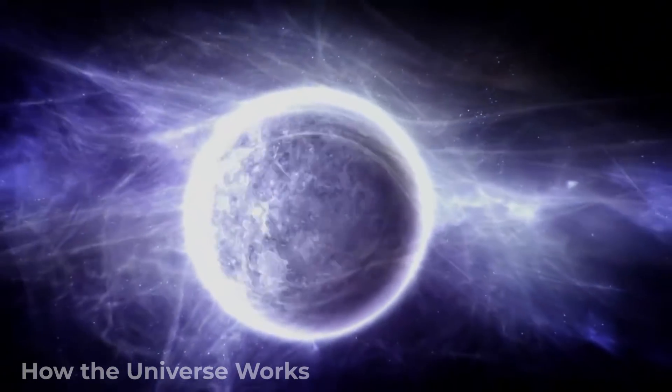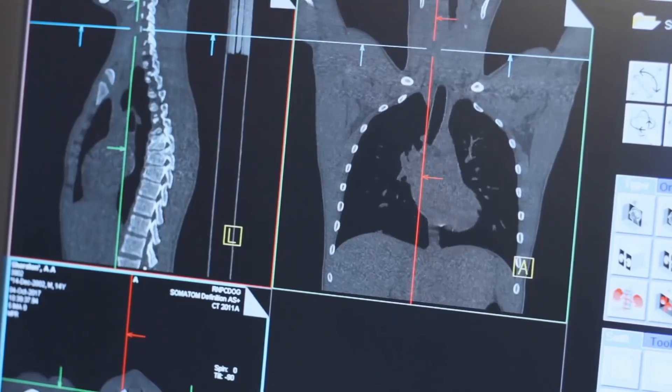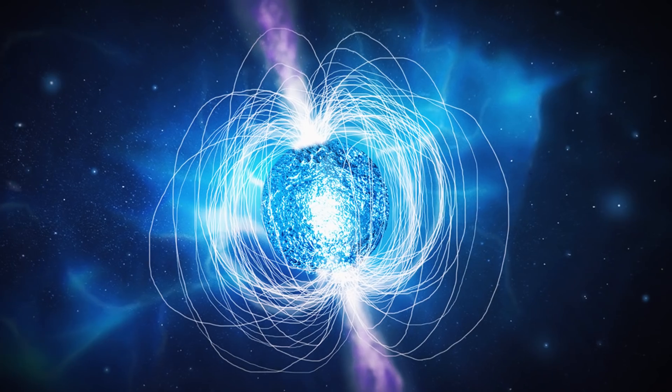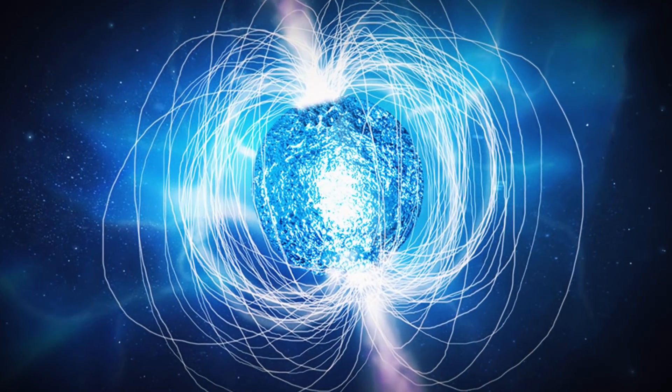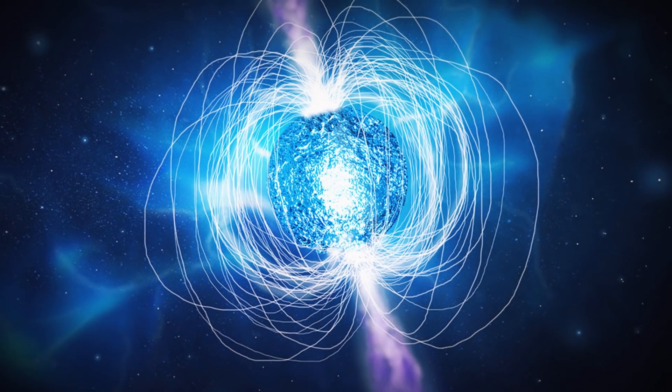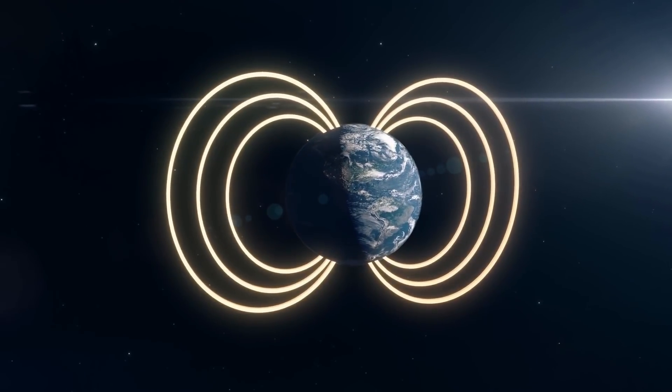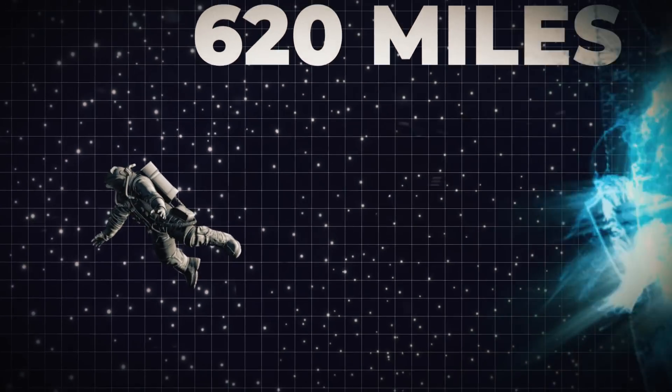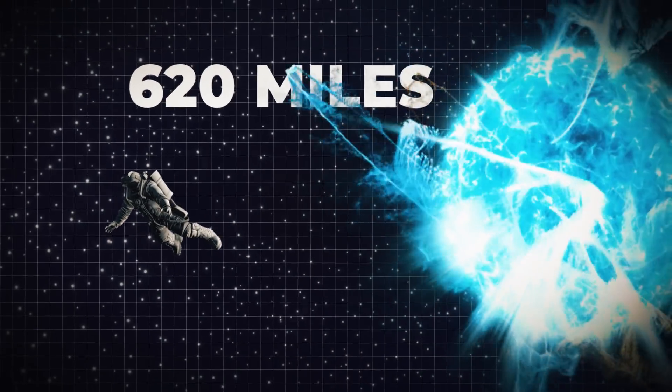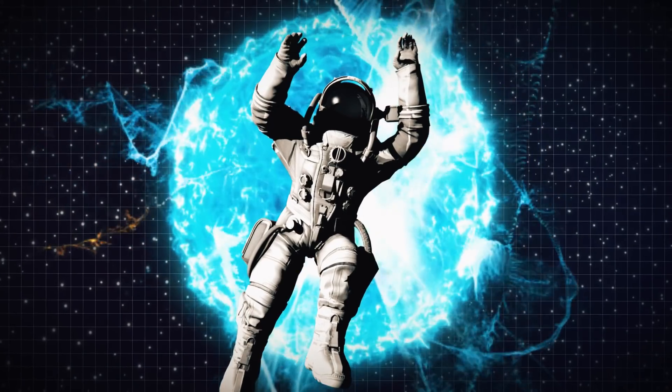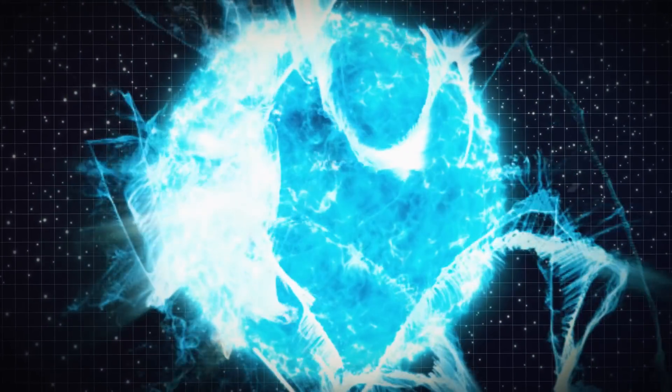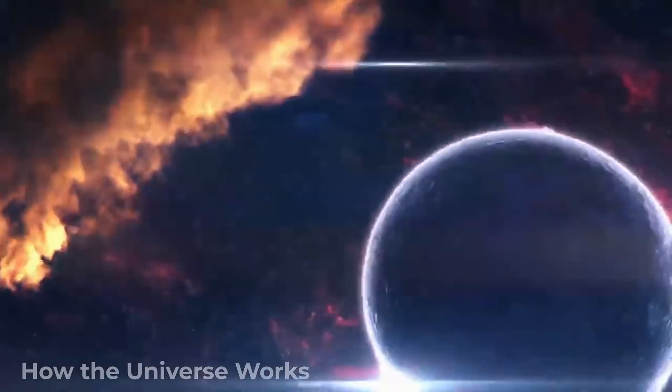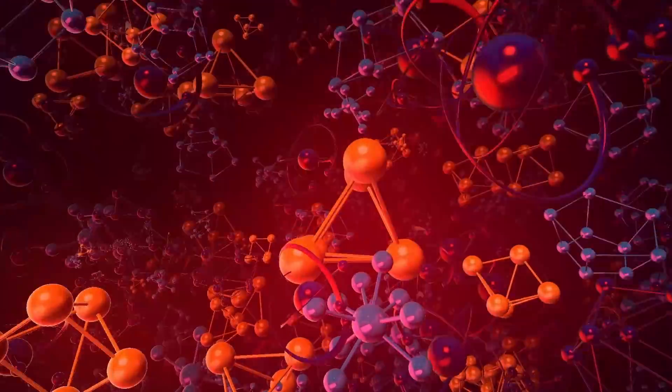The impact a neutron star has on a human body would be just as bad too. The magnetic field of a neutron star can be millions of times stronger than what we are used to on Earth. In fact, if you were only 620 miles from such a star, your body would dissolve because of the destruction that the magnetic field would have on the atoms that compose your body.